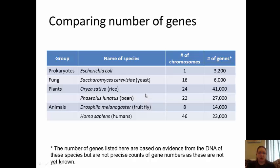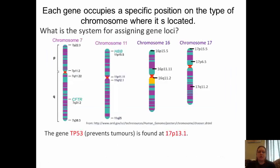A gene locus is the specific position on the chromosome where a gene is located. There is a system for assigning a name to that location. We're looking here at a specific gene, TP53, which functions to prevent tumors, and we're examining where it's found.